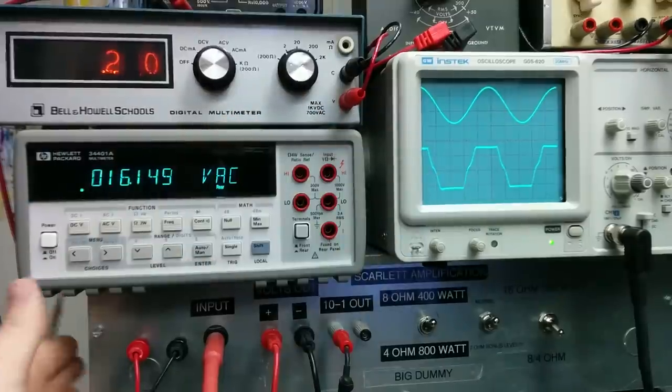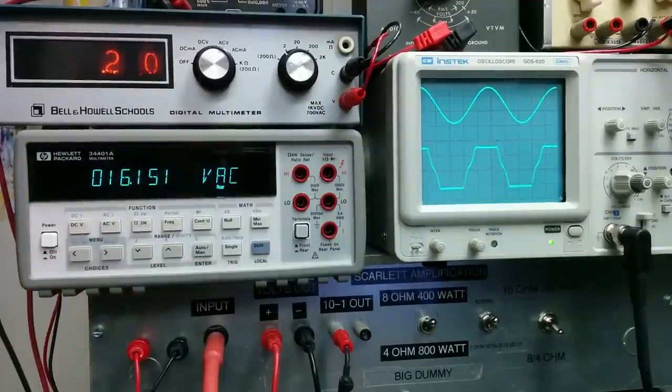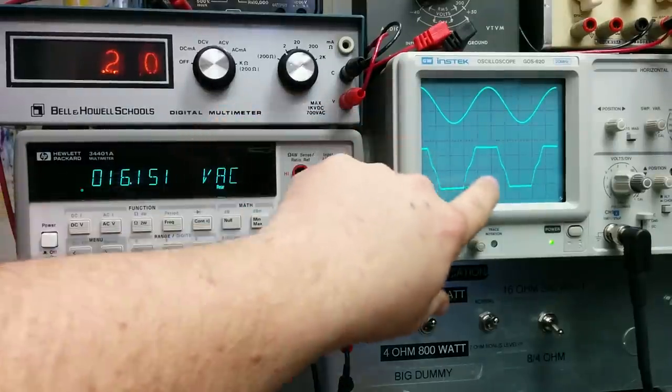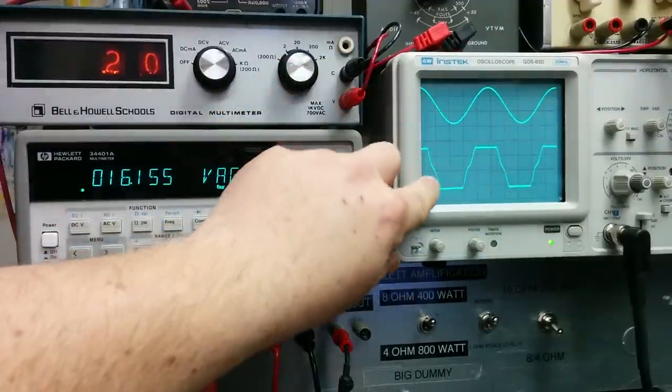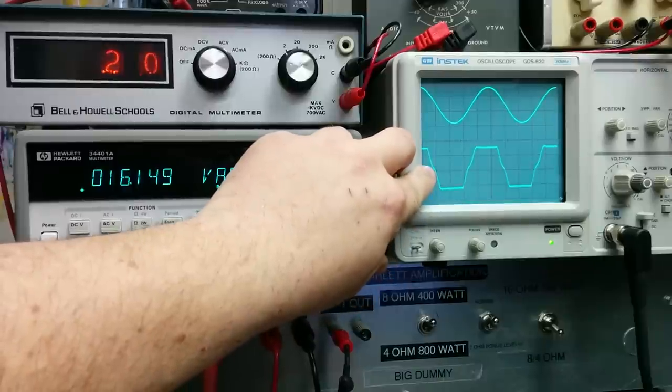The phase splitter feeds two separate signals, one to each tube, and then they're summed together in the output transformer and fed to our dummy load, which would normally be our speaker. So now you can see where the two signals split there's some discrepancy there, and that's also a distortion that we'll hear.